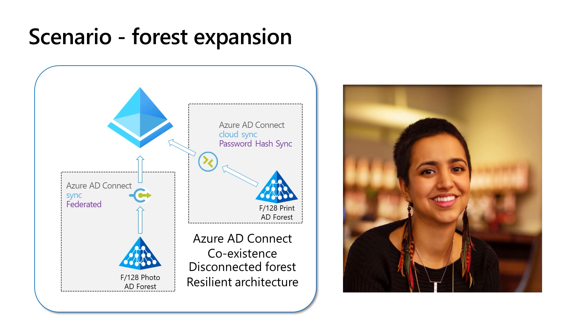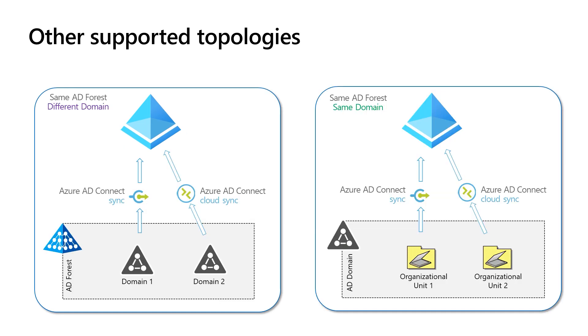Although quite different scenarios, both Evan and Charlie will follow very similar steps to deploy Cloud Sync in their environment. You can also use both Cloud Sync and Classic Sync at the same time for different domains in the same forest, as well as different OUs in the same domain. The catch is you just can't have both solutions syncing the same objects to Azure AD, so you need to make sure the two solutions are scoped appropriately. Thank you for watching this video on the new Cloud Sync feature. We hope you found it useful and look forward to your feedback.